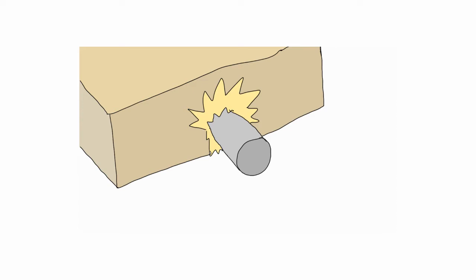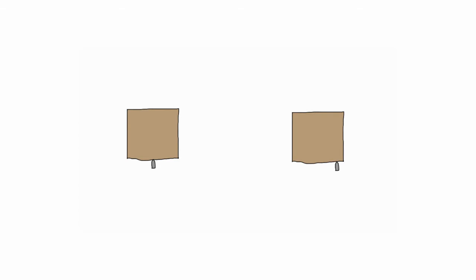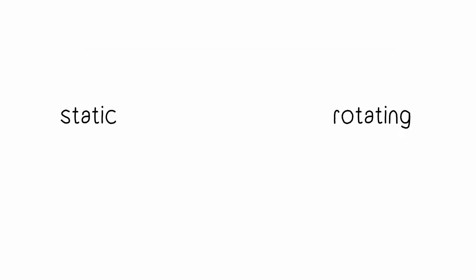I could just leave the explanation there, however I've done a thought experiment based on what I think is happening to show that it is almost certainly the explanation for the question posed. What I'm suggesting is happening is that in the rotating block, the bullet travels less far in than it does in the one where it doesn't rotate.